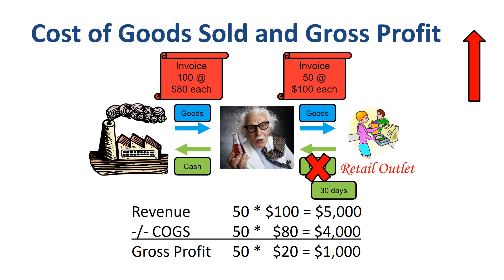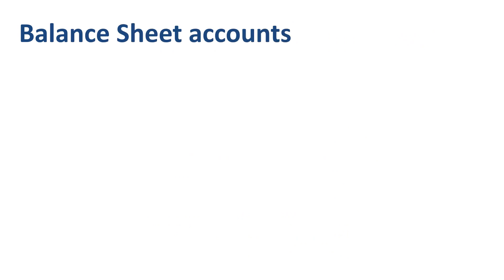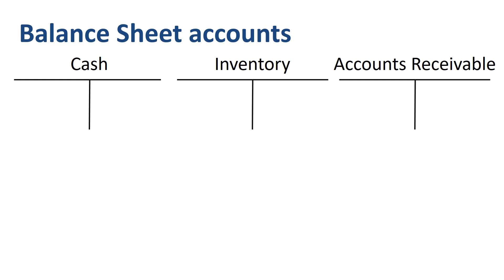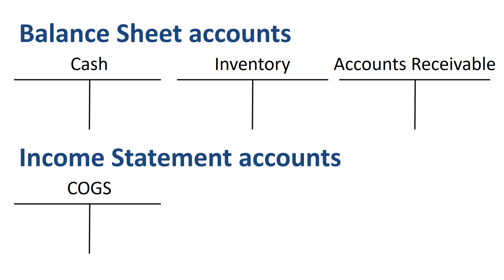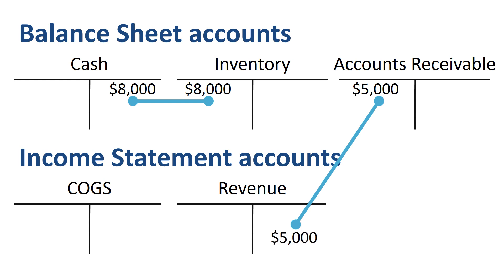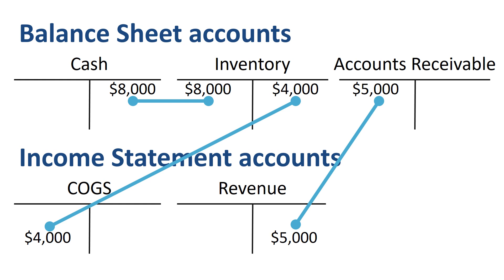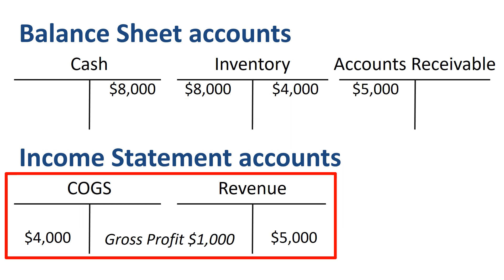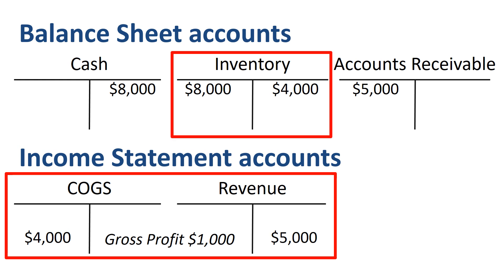Let's go through the journal entries for the transactions. These involve three balance sheet accounts — cash, inventory, and accounts receivable — and two income statement accounts: cost of goods sold and revenue. First, the purchase of goods from the supplier paid in cash: debit inventory $8000, credit cash $8000. Invoicing the customer: debit accounts receivable $5000, credit revenue $5000. Delivering the product: debit cost of goods sold $4000, credit inventory $4000. Gross profit is $1000 — revenue of $5000 minus cost of goods sold of $4000. The ending inventory balance is $4000: purchases of $8000 minus the 50 units sold at a COGS value of $4000.